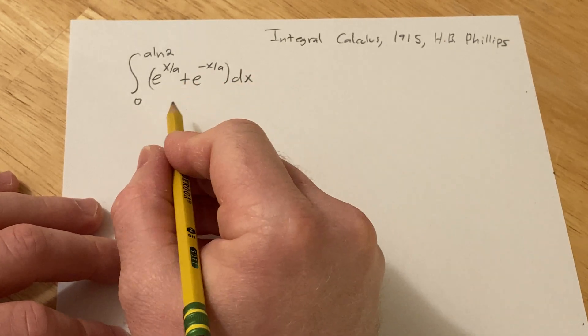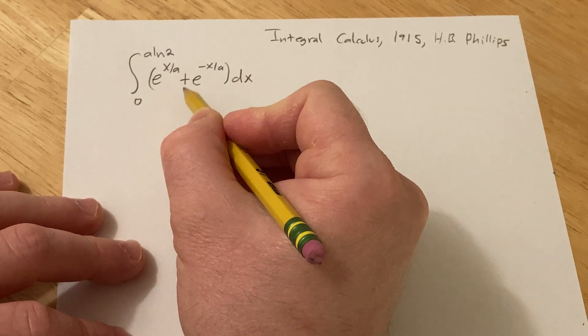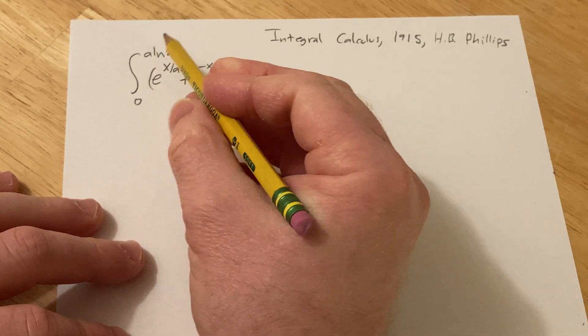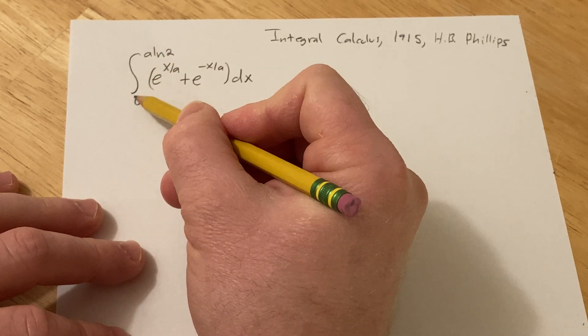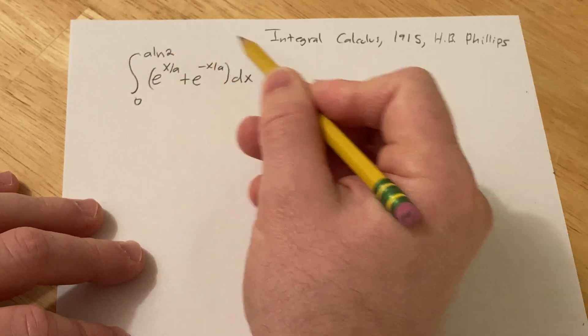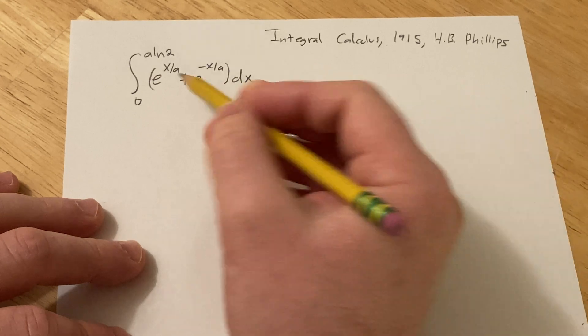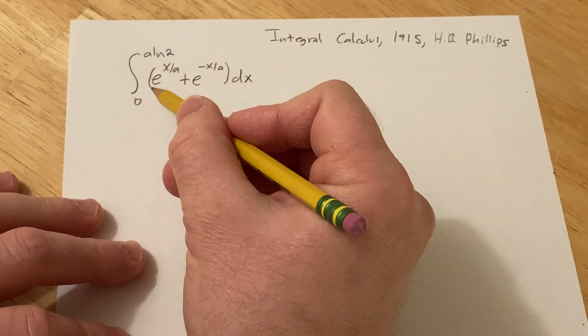This is just one of the exercises in the book. I haven't done this problem yet, so we have to integrate e to the x over a plus e to the negative x over a with respect to x. It's a definite integral going from 0 to a ln2. It doesn't say what a is, I'm assuming a is not 0 and it's some type of constant. Let's go ahead and work this out.